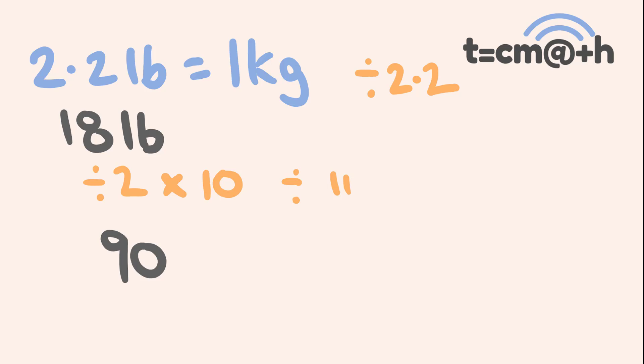Well, 90 divided by 11, you go, okay, well, 11 goes into 9 eight times and there's two left over. So it's going to be around about 8.1, 8.2. That's our answer.